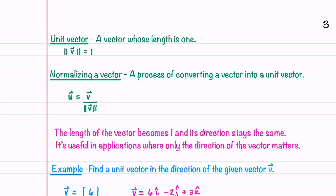Let's now talk about unit vectors. A unit vector is a vector whose length is equal to 1. If we want to make a vector a unit vector, we go through a process called normalizing. Our unit vector is just our vector v divided by its magnitude. When we normalize a vector, its length becomes 1 and its direction stays the same — this is often useful in applications where only the direction matters.